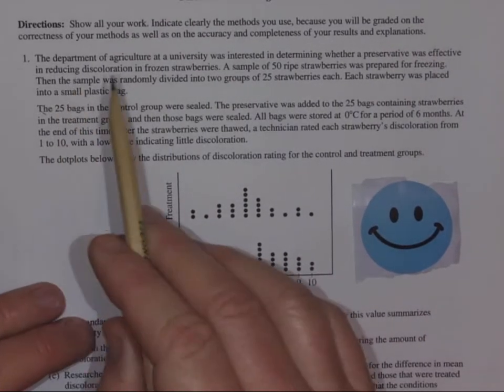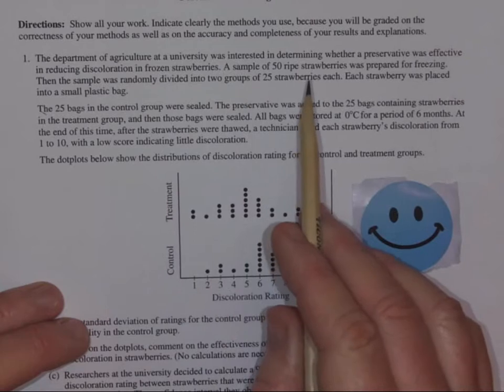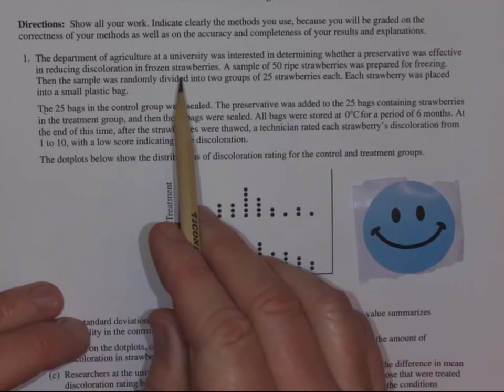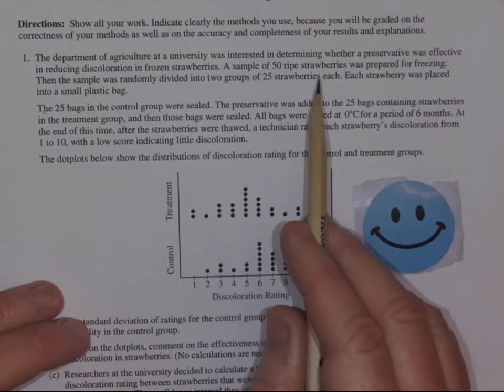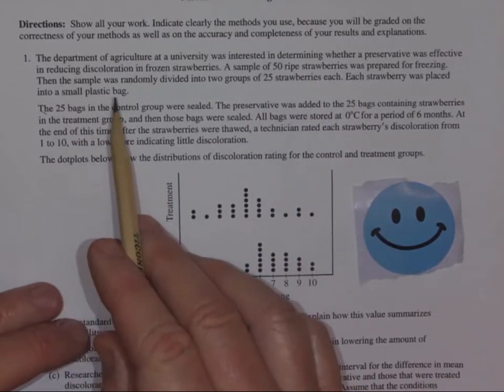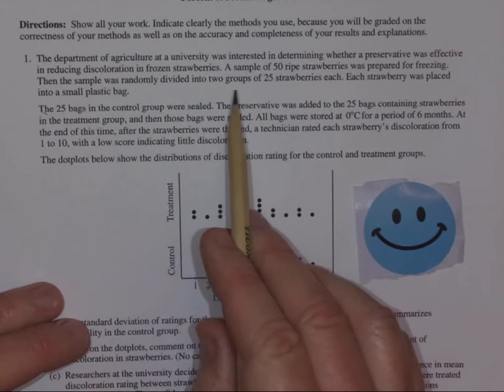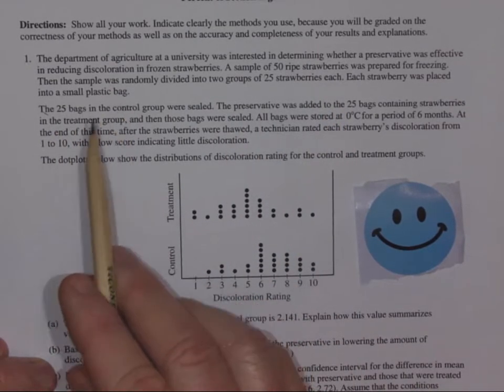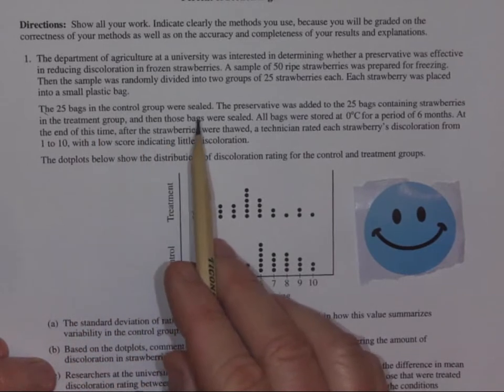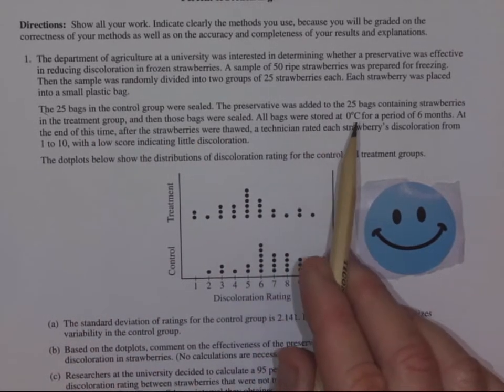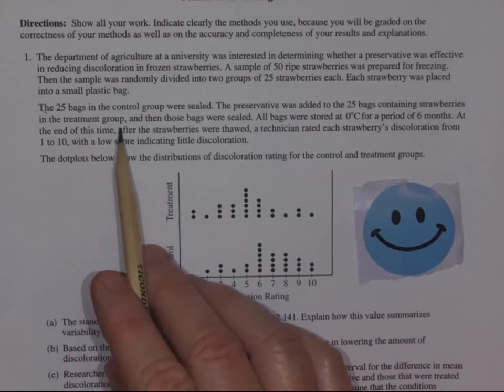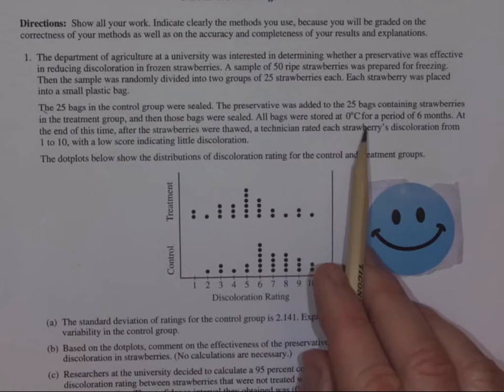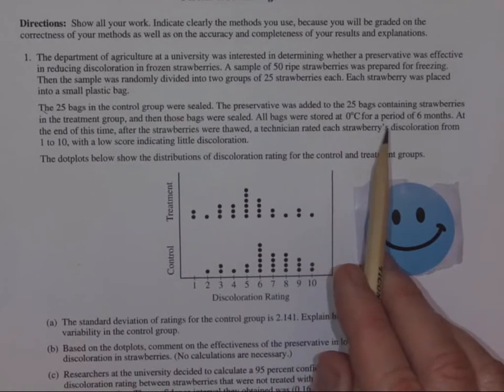This one says the Department of Agriculture at the University was interested in determining whether a preservative was effective in reducing discoloration in frozen strawberries. A sample of 50 ripe strawberries was prepared for freezing. Then the sample was randomly divided into two groups of 25 strawberries each. Each strawberry was placed into a small plastic bag. The 25 bags in the control group were sealed. The preservative was added to the 25 bags containing strawberries in the treatment groups. Then those bags were sealed. All bags were stored at zero degrees Celsius for a period of six months.